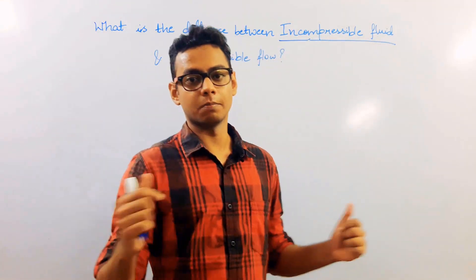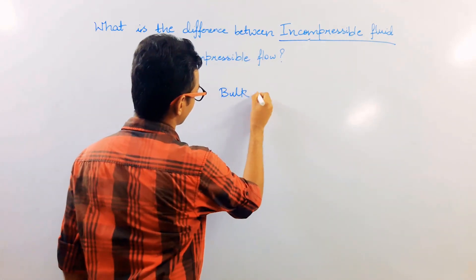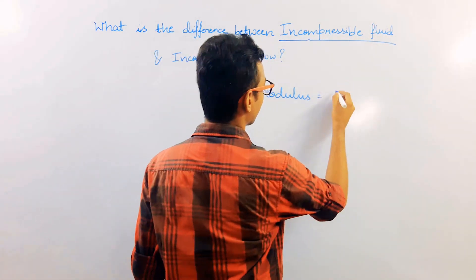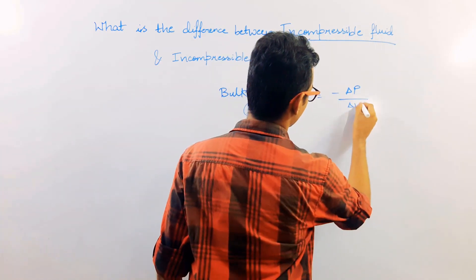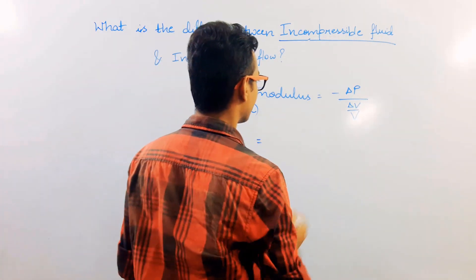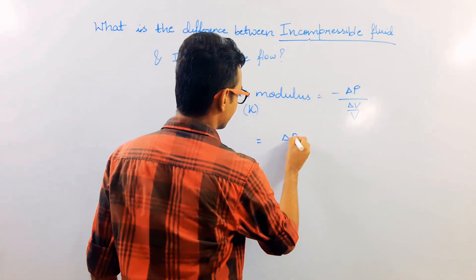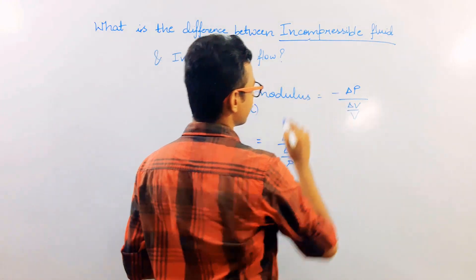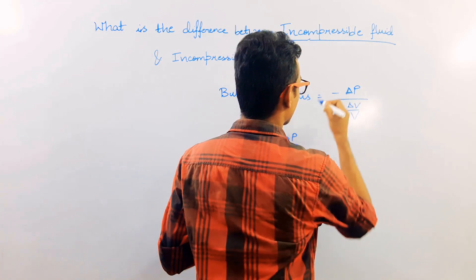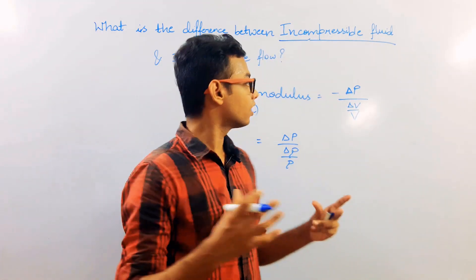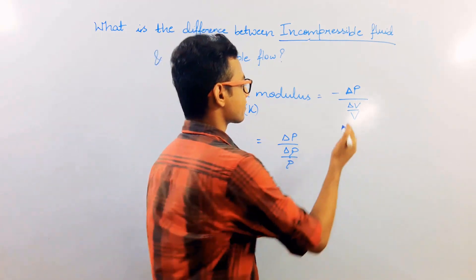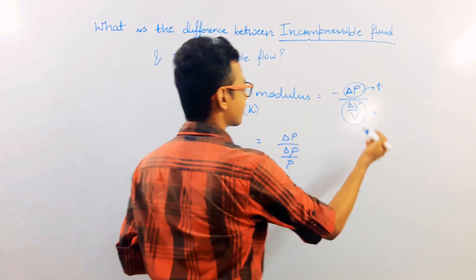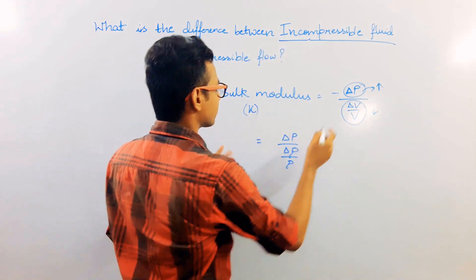Let me define a term called bulk modulus, denoted by the letter K. Bulk modulus is the ratio of change in pressure with volumetric strain, which can also be written as change in pressure with respect to the ratio of change in density to density. The negative sign is included because when we apply pressure on a fluid, the volume decreases — so to keep the whole term positive, a negative sign is introduced.